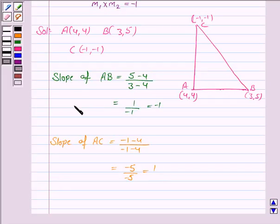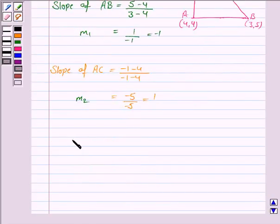Let's call slope of AB as M1 and slope of AC as M2. Now, M1 into M2, that is the product of the slopes, is equal to minus 1 into 1, that is equal to minus 1.